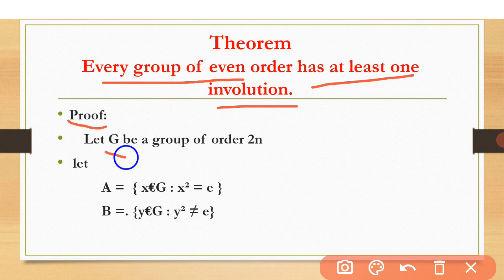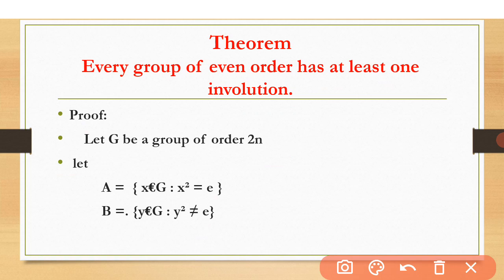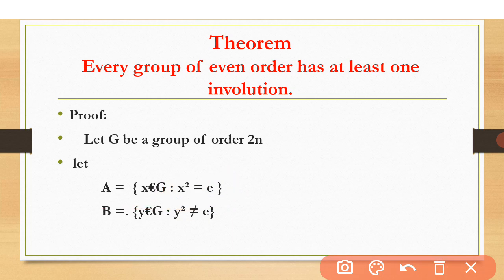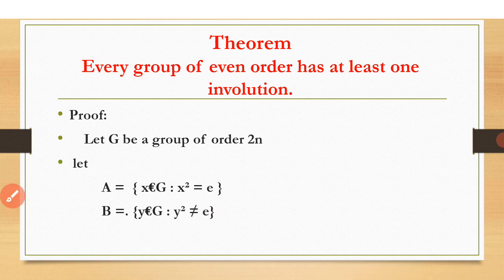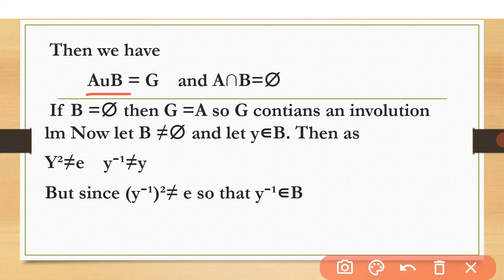Let G be a group of order 2n, meaning it has even order — for example, 2, 4, 6, 8, 10, and so on. Let A be the subset of G where x belongs to G and x²=e, so A contains involution elements. Let B be the subset where y²≠e, meaning B contains no involution elements. Then A union B equals G, so these two sets make up the complete group G.